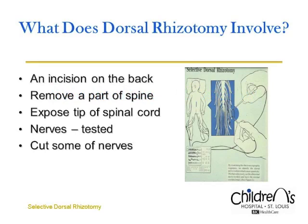Selective dorsal rhizotomy is a neurosurgical procedure that reduces lower extremity spasticity in patients with specific types of cerebral palsy. Our center has been performing selective dorsal rhizotomy since 1987. It is now clear that selective dorsal rhizotomy is an excellent option for many children and young adults with spastic cerebral palsy. For selective dorsal rhizotomy, an incision is made on the back. A small section of the back part of the bone is removed from the spine and the sensory nerves of the spinal canal are exposed. Each of the sensory nerves are tested to determine if it contributes to spasticity, and some of the nerves are cut.